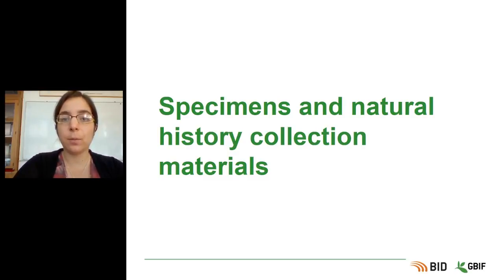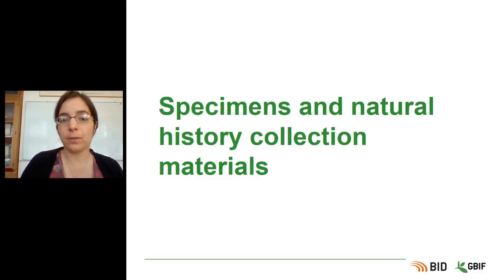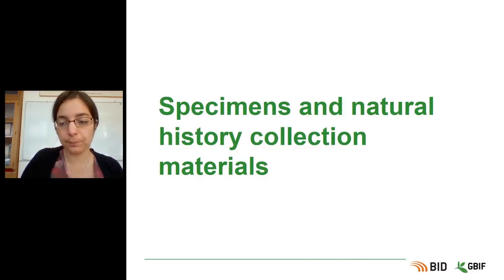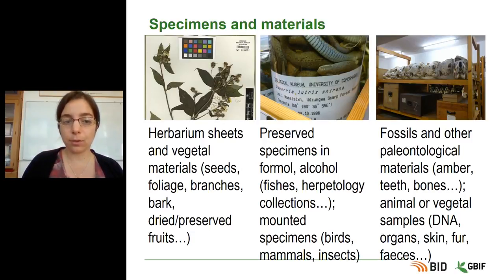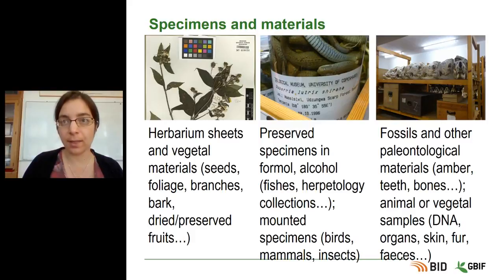People can also work with specimens and natural history collection materials. We can talk about herbarium sheets and vegetal materials, such as seeds, foliage, branches, bark, and dried or preserved fruits. Sometimes you can also have preserved specimens in formalin or alcohol or in other liquid states, such as fishes or herpetology collections.